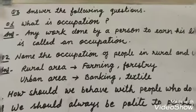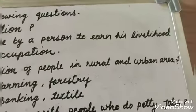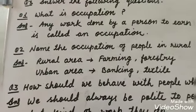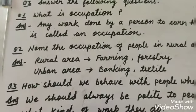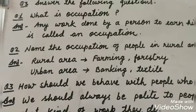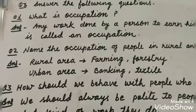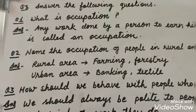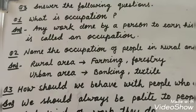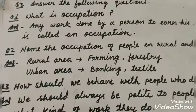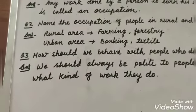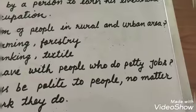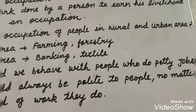Question number two: name the occupations of people in rural area and urban area. Rural areas are grameen (village) areas, and urban areas are shahri (city) areas. In rural areas, people mostly do farming and forestry — they cut wood from forests and sell it. In urban areas, people mostly do banking and textile work, such as cloth factories.